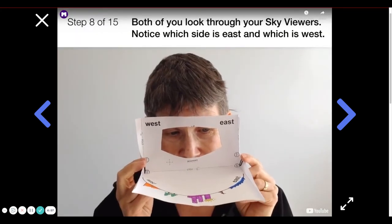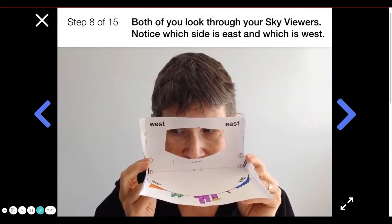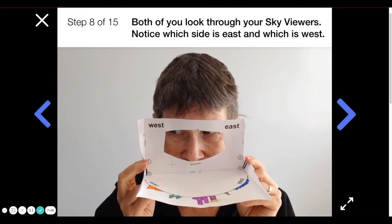Both of you look through your sky viewers. Notice which side is east and which is west. Whenever you use the sky viewer, you should keep your nose pointed right at Noseopolis, the city at the center. You can move your eyes to look around, but don't move your head.